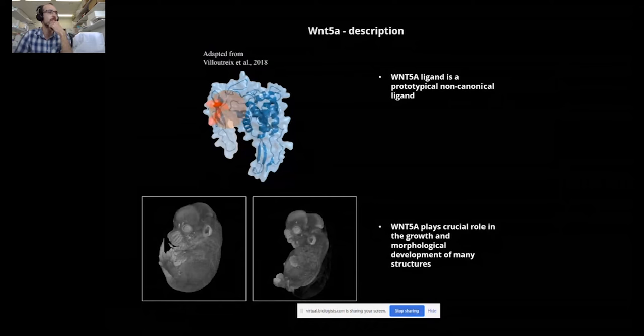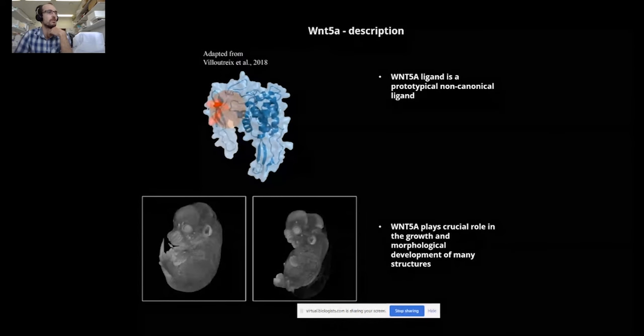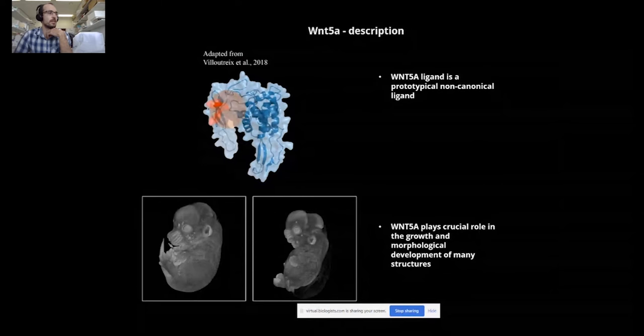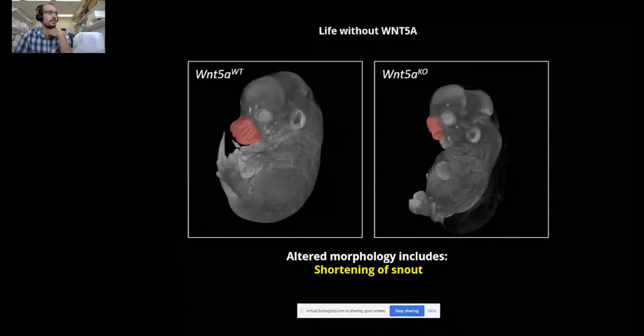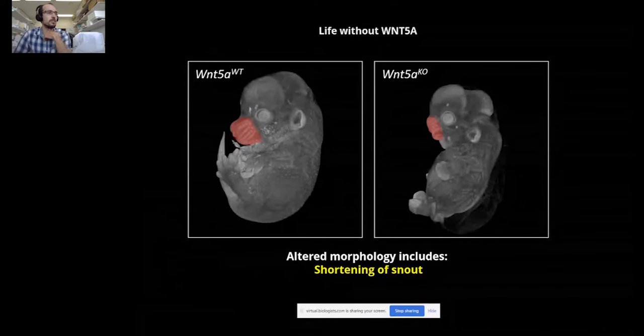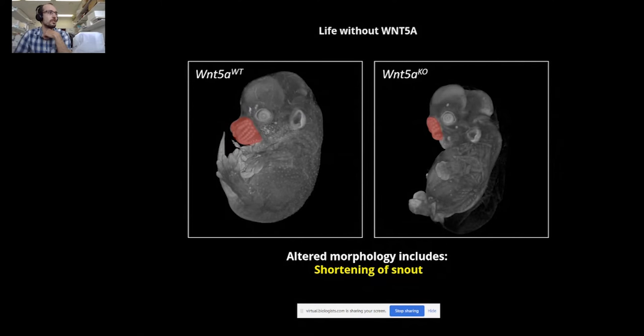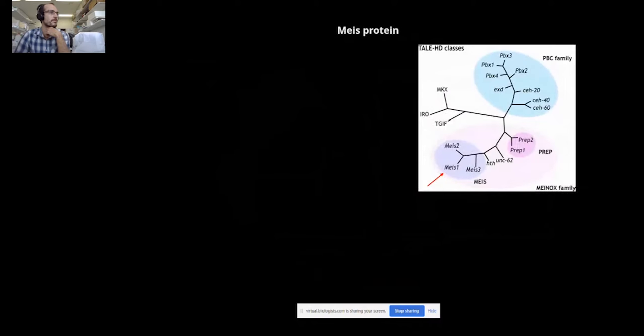WNT5A is a prototypical non-canonical ligand and one of its key features is its role as a central regulator of morphogenesis and structure outgrowth across the animal kingdom. A good example is the developing mouse embryo where loss of WNT5A can lead to, for example, shortening of the snout, various craniofacial defects, or hypomorphism of limbs.